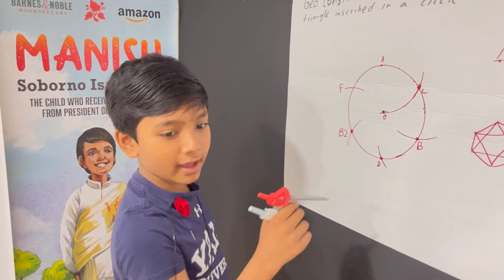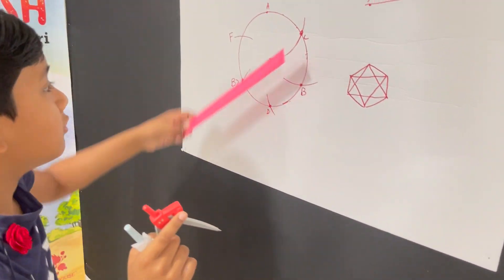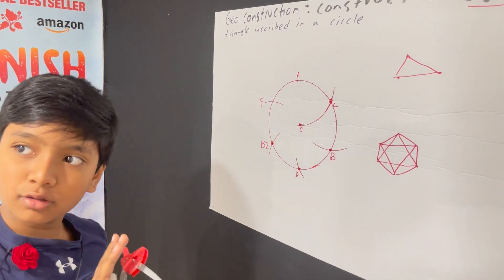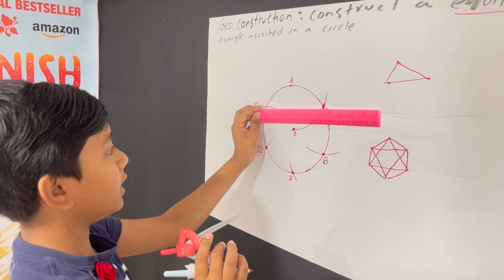Alright, so now what do we do? Well, we have a hexagon over here. Well, we only need to connect three of the points.